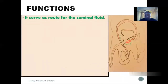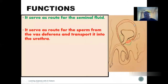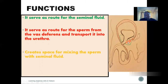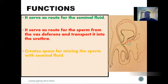The functions of the ejaculatory duct: first, it provides a route through which the seminal vesicle empties its secretions. The ejaculatory duct is where the seminal vesicle empties its secretions into. It also serves as a route through which sperm coming from the vas deferens passes. Additionally, within this region, the sperm from the vas deferens and the secretions from the seminal vesicle are mixed — so it creates a space for the mixing of content from the vas deferens and the seminal vesicles.